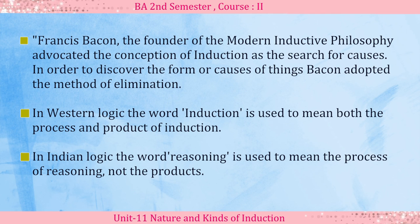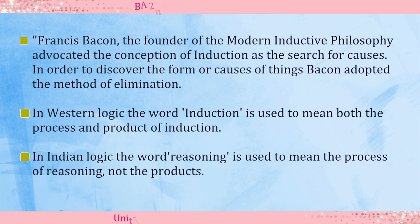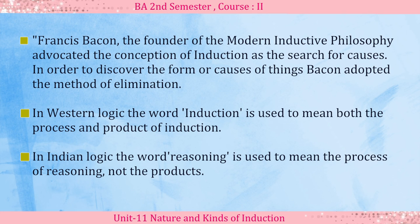That is why, so far as deduction is concerned, its conclusion is always correct or valid. But so far as inductive inferences are concerned, with the help of experience and observation, we come to a particular proposition. The conclusion is a general proposition and the premises are particular propositions. Sometimes we have to eliminate many things and sometimes observe and experience many things, and on the basis of those observations, experiences, and elimination, finally we come to a general conclusion.